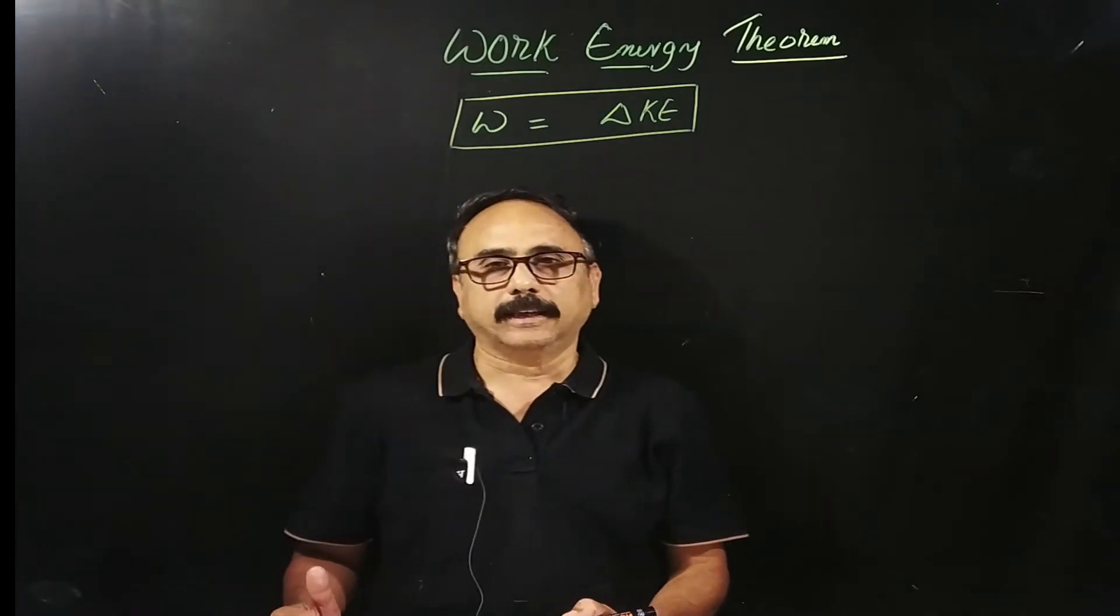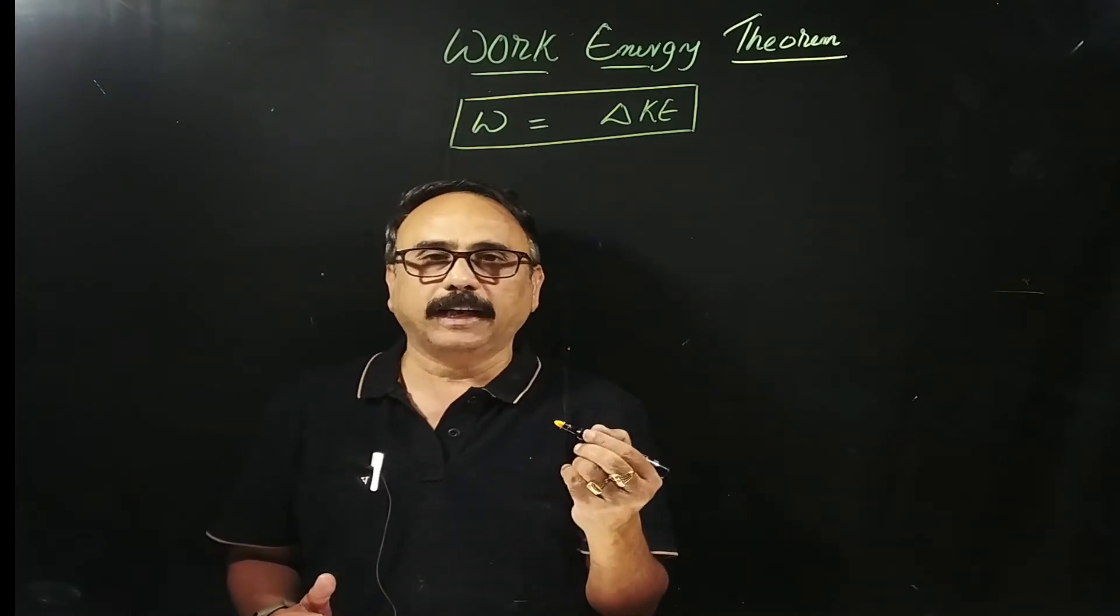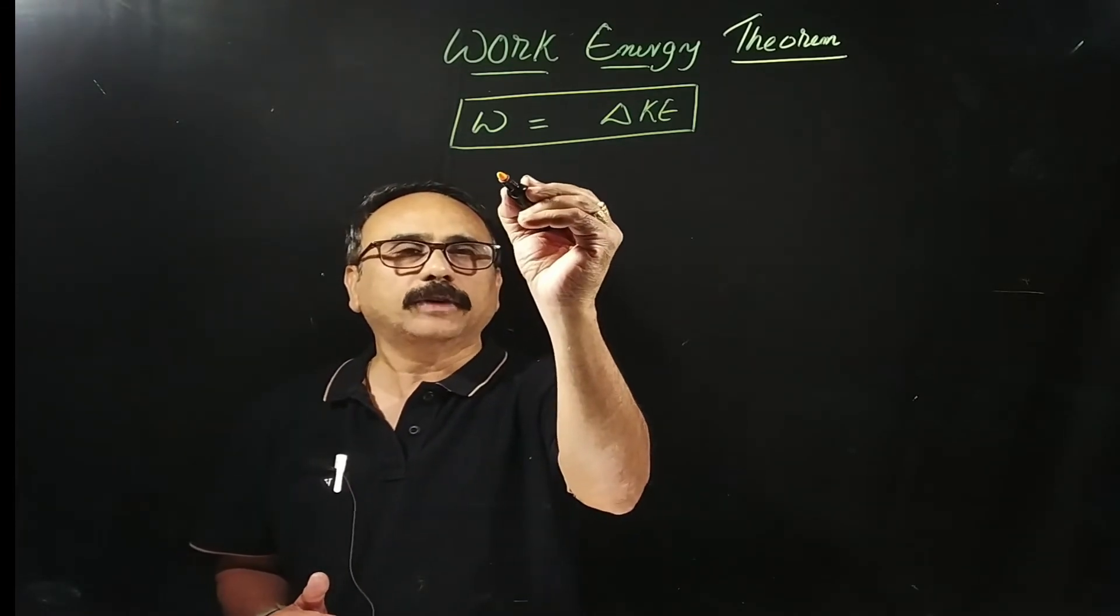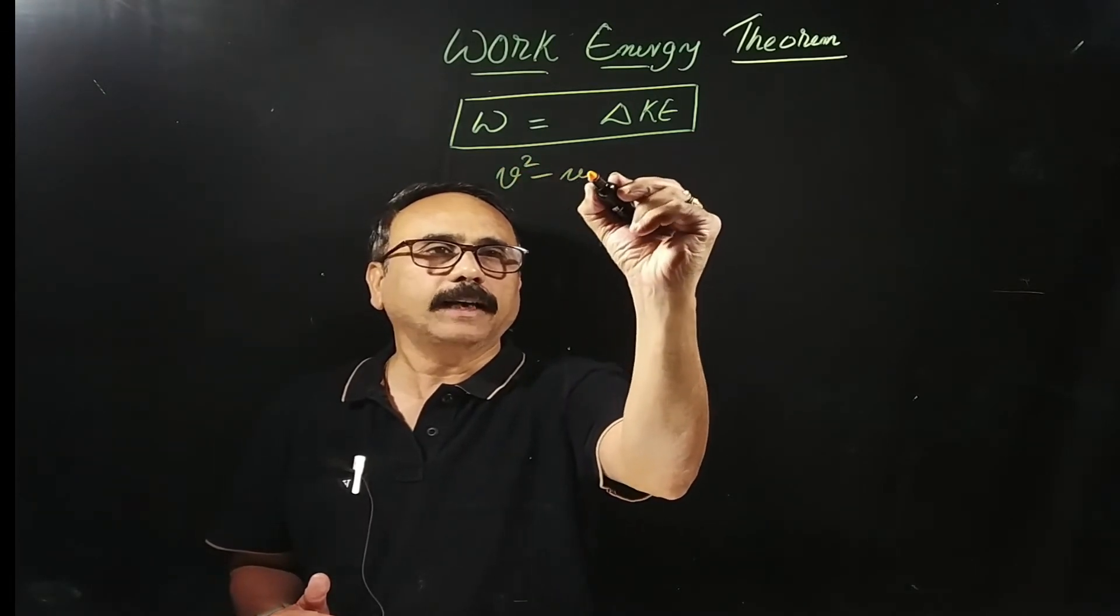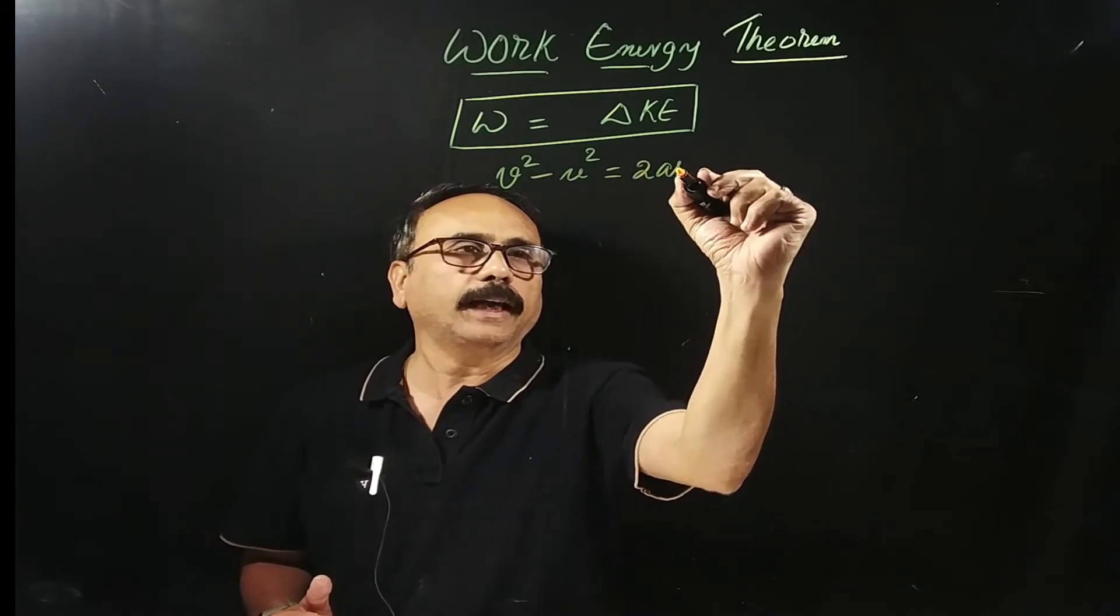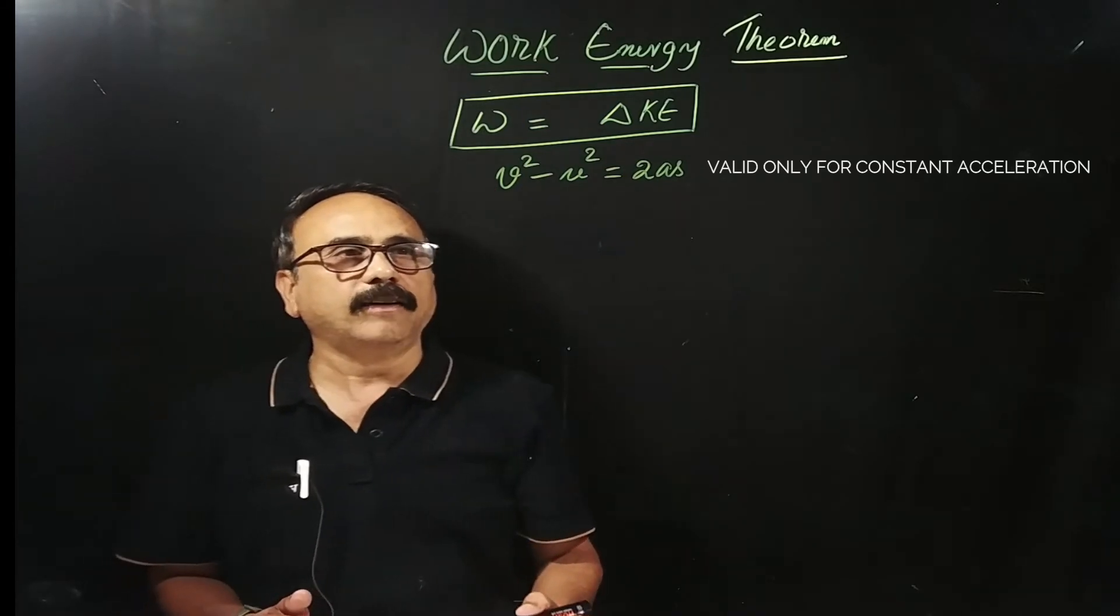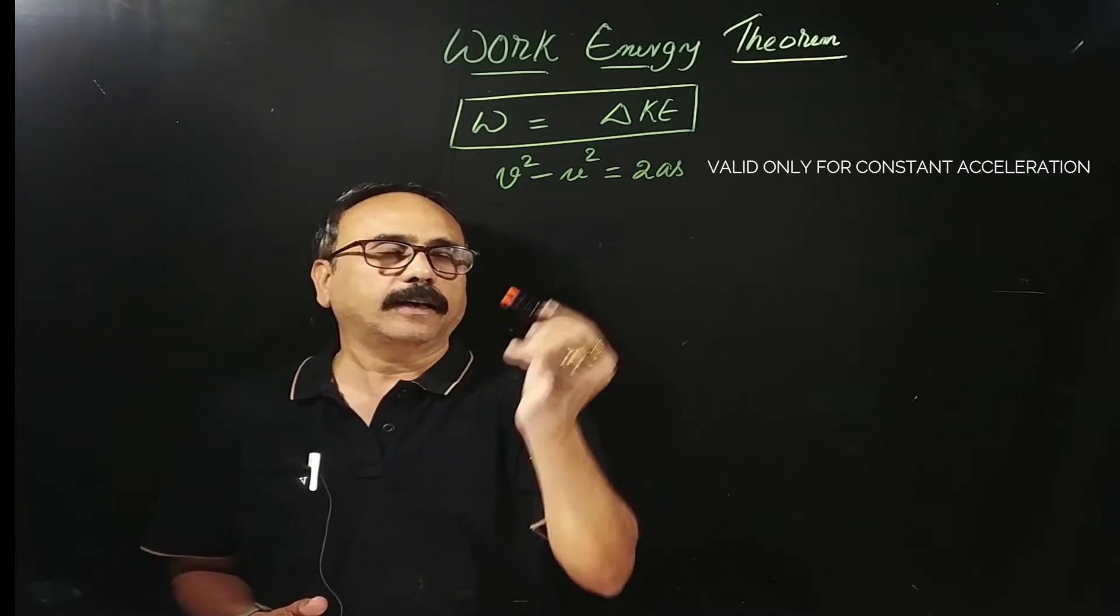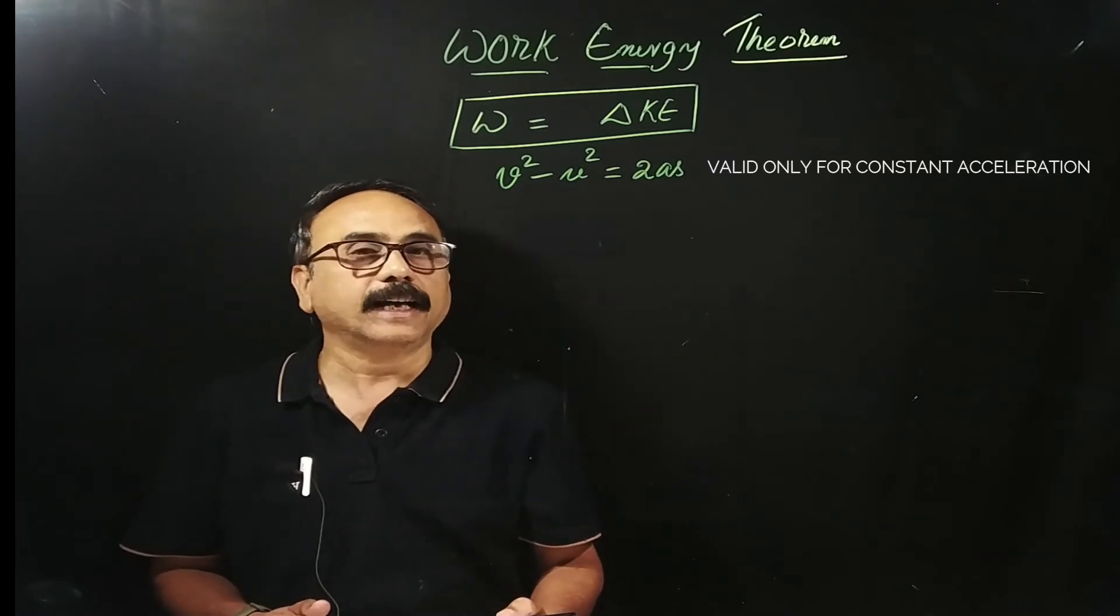Now, let us derive this with the help of the equation of motion which we have learnt in kinematics. V square minus U square is equal to 2AS. Here, V is the final velocity, U is the initial velocity, A is the acceleration and S is the displacement.